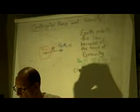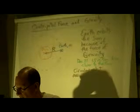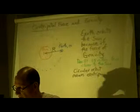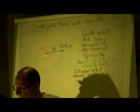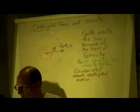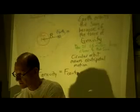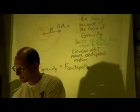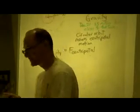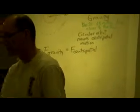So circular orbit means centripetal motion. So what I'm trying to say is, therefore, F gravity is causing the F centripetal. And that has a whole bunch of implications.